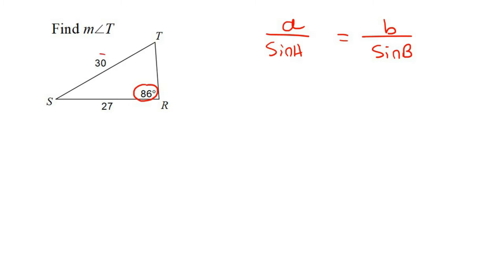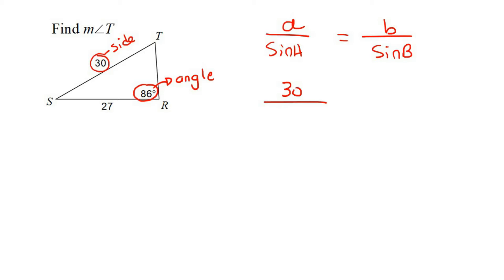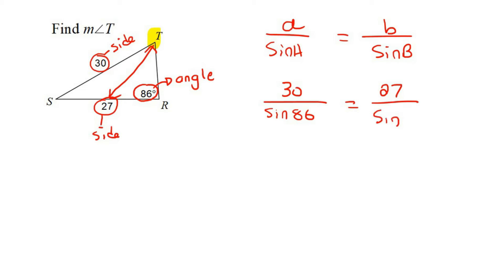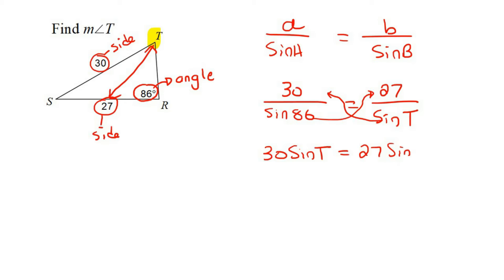Now, these two are opposites. Remember that this is the side, and this in the corner is the angle. So we could say 30 over sin of its angle — and it must always be sin 86, not just 86; a lot of students just say 86. And then on the other side, we're looking for T. So they are opposites. We could say 27, which is the side — remember that's the side first — and then the angle is T. Now what you do is cross multiplication, so that's going to be 30 sin T equals to 27 sin 86.